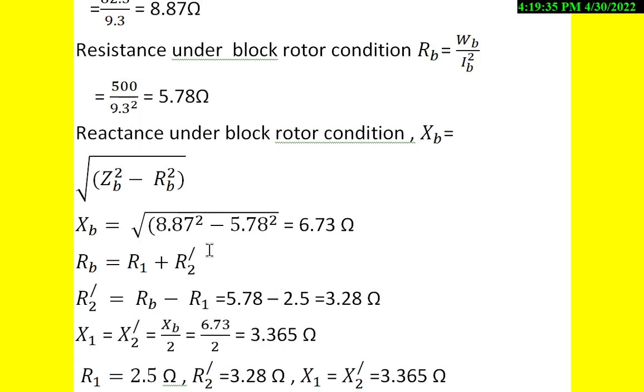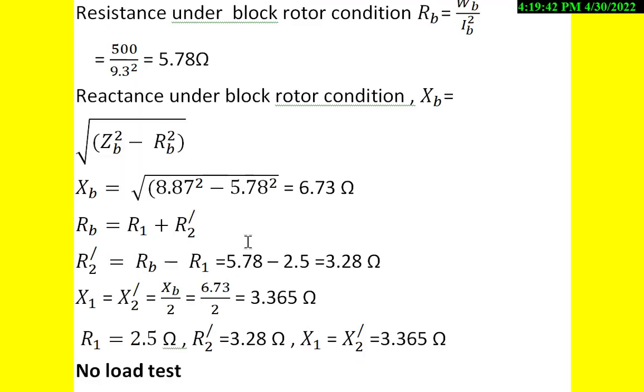From the equivalent circuit, RB = R1 + R2'. R1 is given in the data, and RB is calculated. R2' (rotor resistance referred to stator side) = RB - R1 = 5.78 - 2.5 = 3.28Ω.